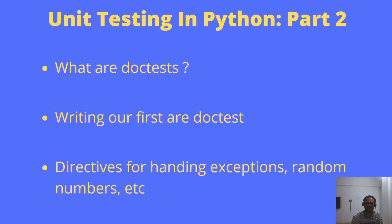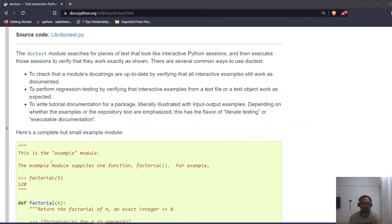Welcome back to the channel. This is the second video in the Python unit testing series, and in this one we're going to be covering doctests. The agenda for this video is: what are doctests, writing our first doctest, some examples, the doctest documentation, and third — the directives, which are special cases for handling exceptions, random numbers, and stuff like that. So without any delay, let's get started.